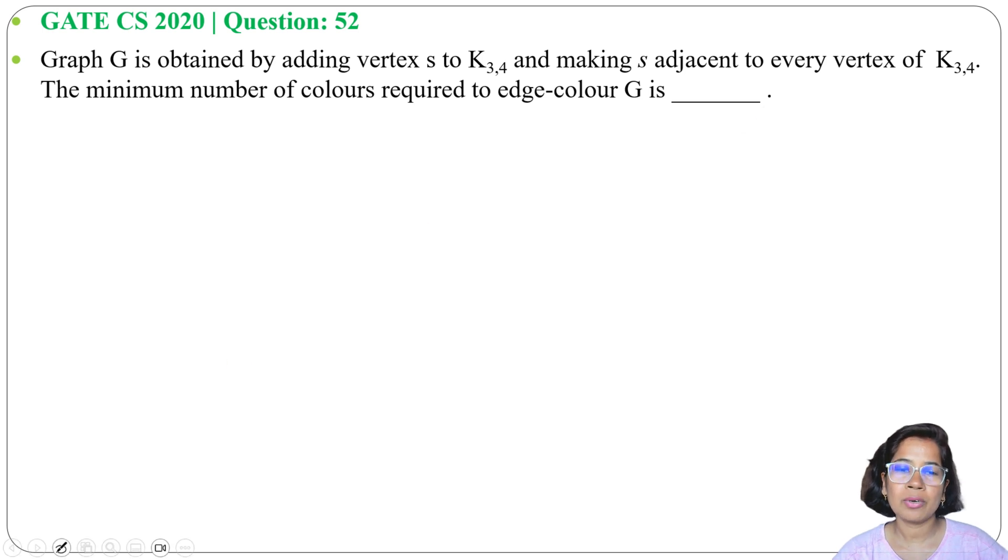First, what is K3,4? K3,4 is a complete bipartite graph having 3 vertices on one side and 4 vertices on the other side. Let me first draw K3,4 with 3 vertices on one side and 4 vertices on the other side.